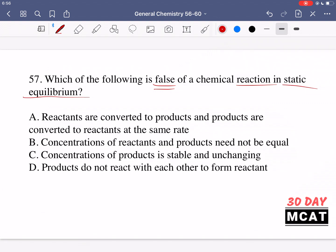But a static equilibrium is when none of the reactants are turning into products anymore and none of the products are turning back into reactants. So what is false about static equilibrium? Option A says reactants are converted to products and products are converted to reactants at the same rate. This is false because it's describing a dynamic equilibrium. So A is the correct answer here.